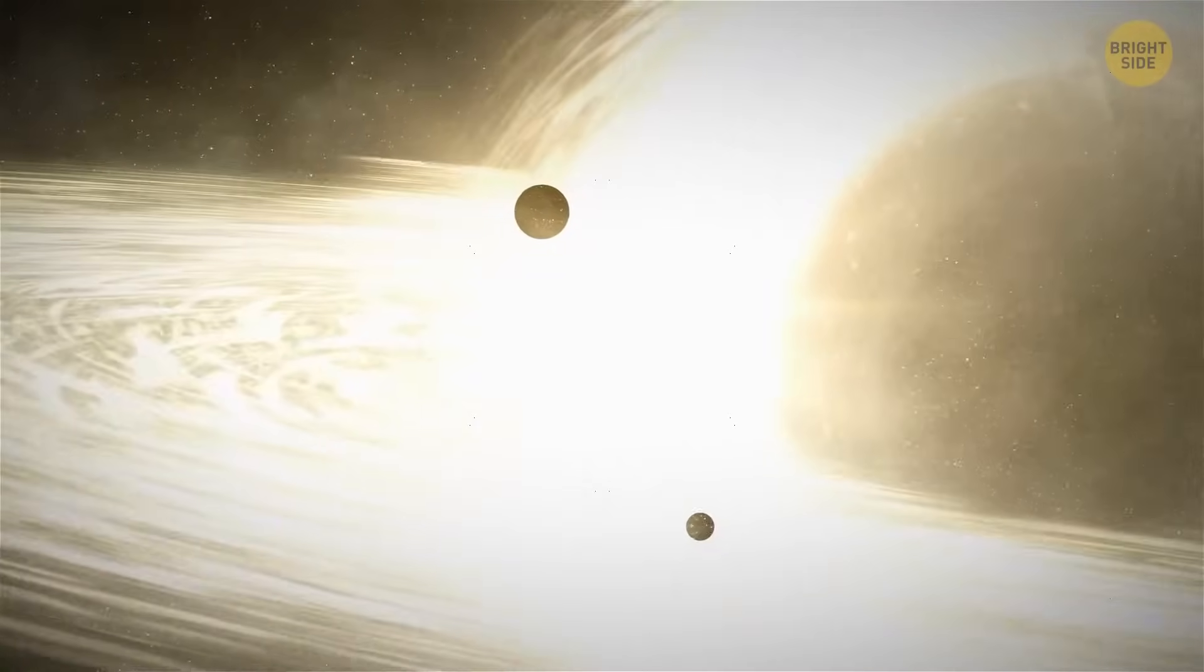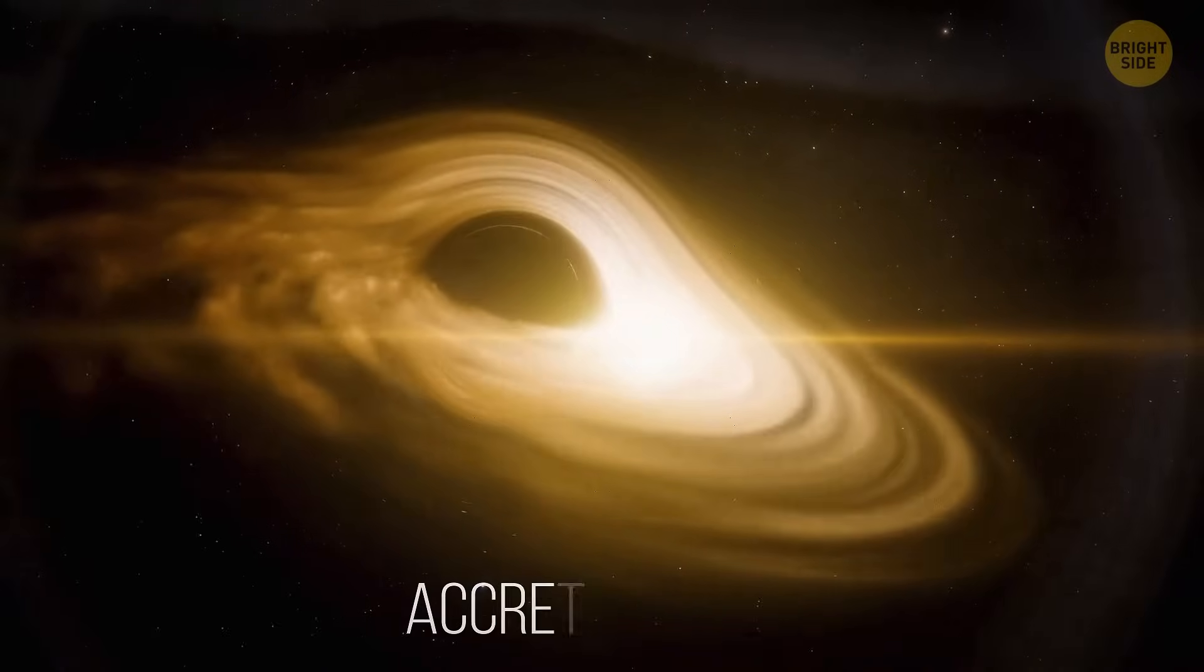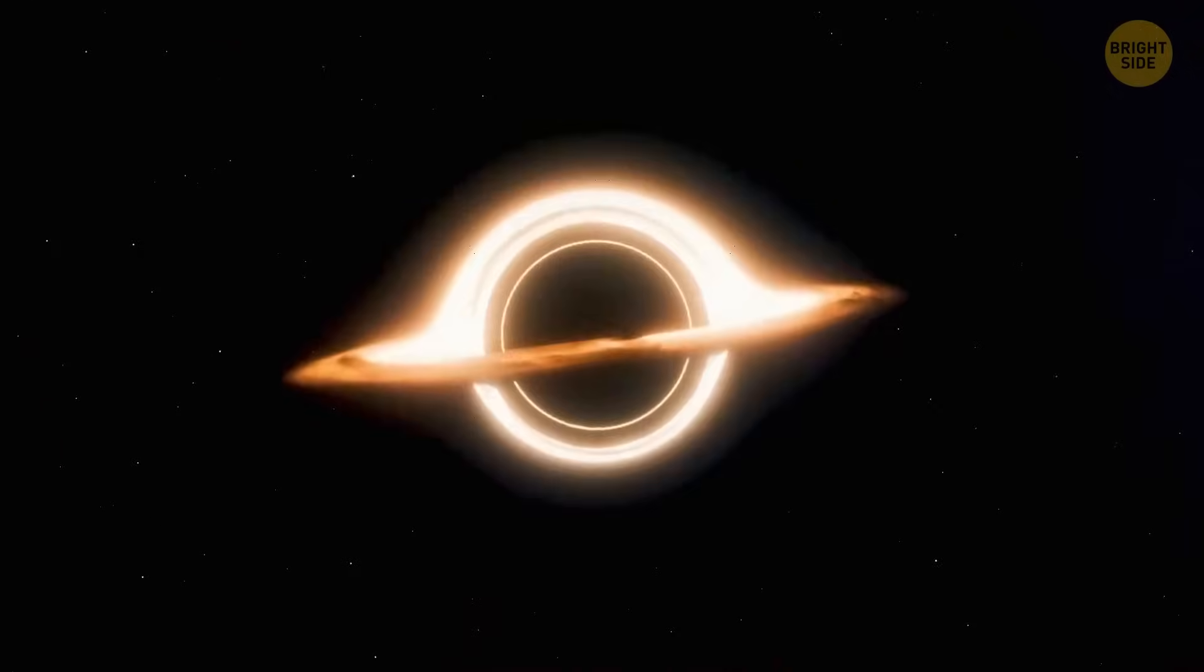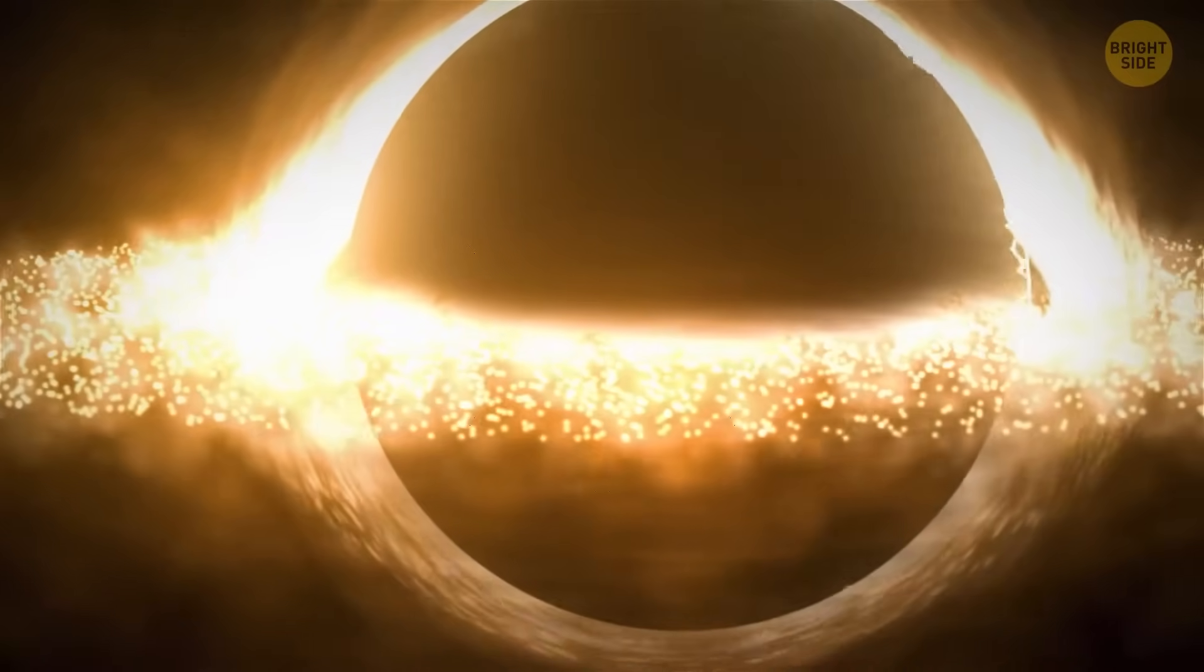Such feeding black holes are usually surrounded by swirls of gas and dust, falling inside them, called accretion disks. The gravitational force of a black hole heats this matter, and it makes the disk shine.